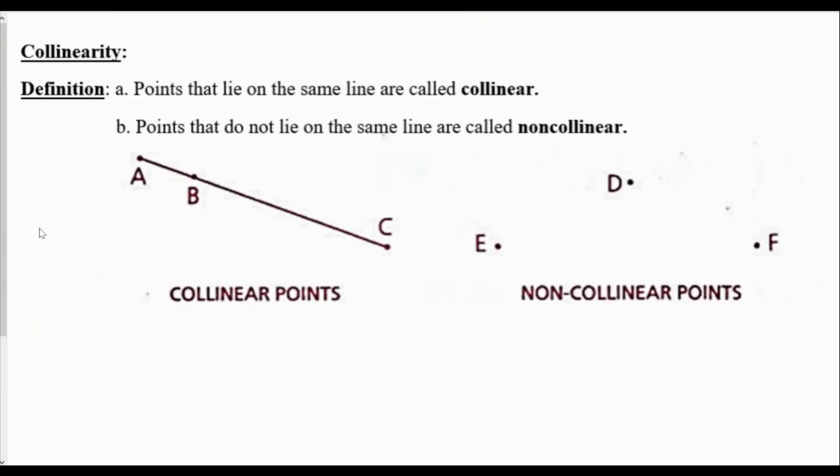So collinearity. Points that lie on the same line are called collinear. Points that do not lie on the same line are called non-collinear. I have two figures below. Points A, B, and C are collinear because they are on the same line. Points E, D, and F are non-collinear because they are not on a line.